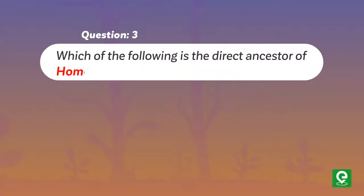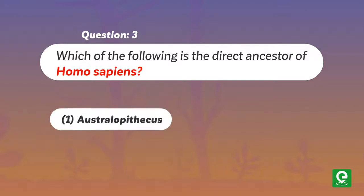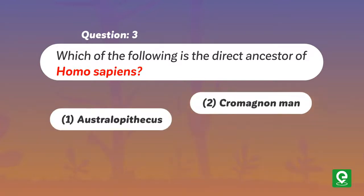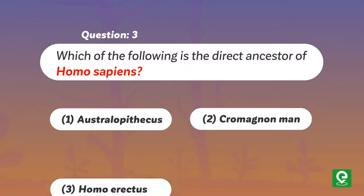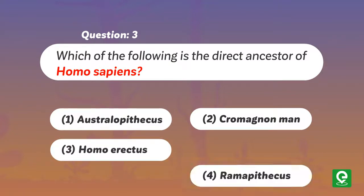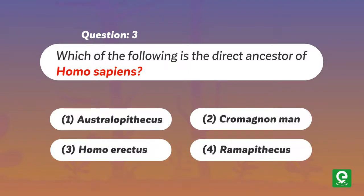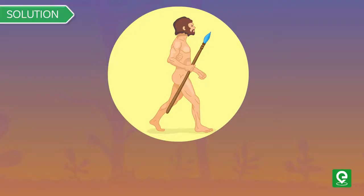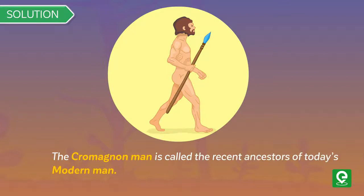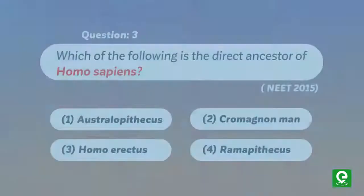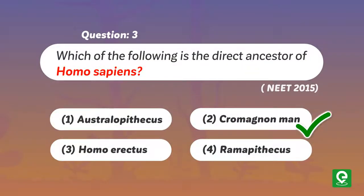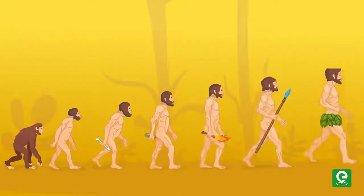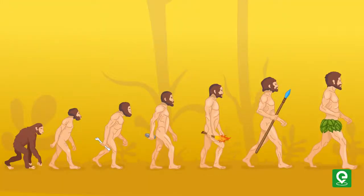Question 3: Which of the following is the direct ancestor of Homo sapiens? (1) Australopithecus, (2) Cro-Magnon man, (3) Homo erectus, or (4) Ramapithecus. This was asked in NEET 2015. Solution: Cro-Magnon man is called the recent ancestor of today's modern man. Hence, option 2 is correct.